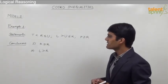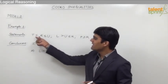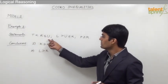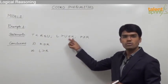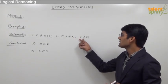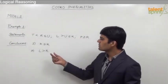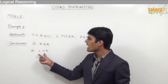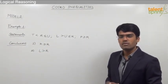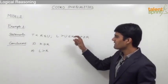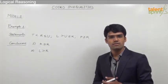The first example: the given statements are t < r ≤ u, the second is l > u ≤ k, and the third is p ≥ r. The two conclusions are: conclusion 1 — k ≥ r, and conclusion 2 — l > r. From these statements we need to find out which of these conclusions are true.